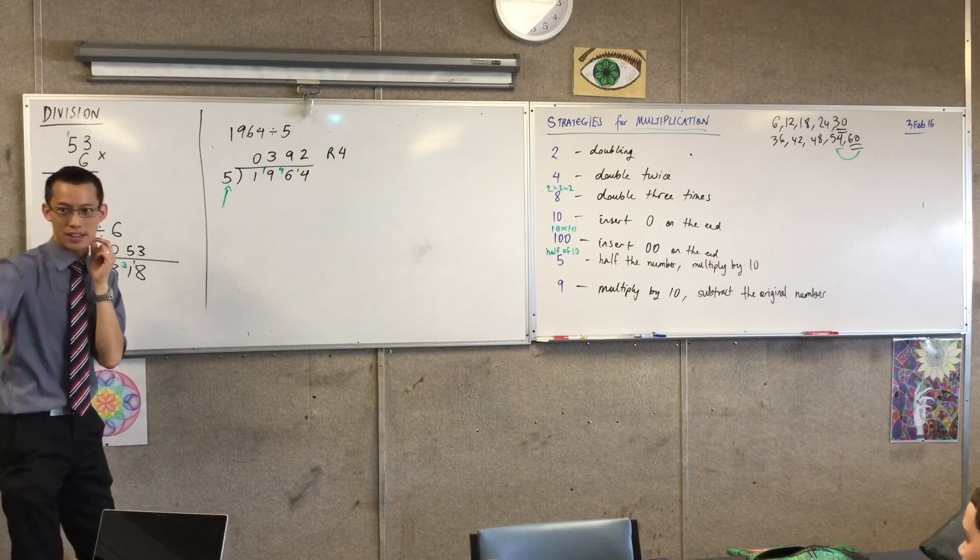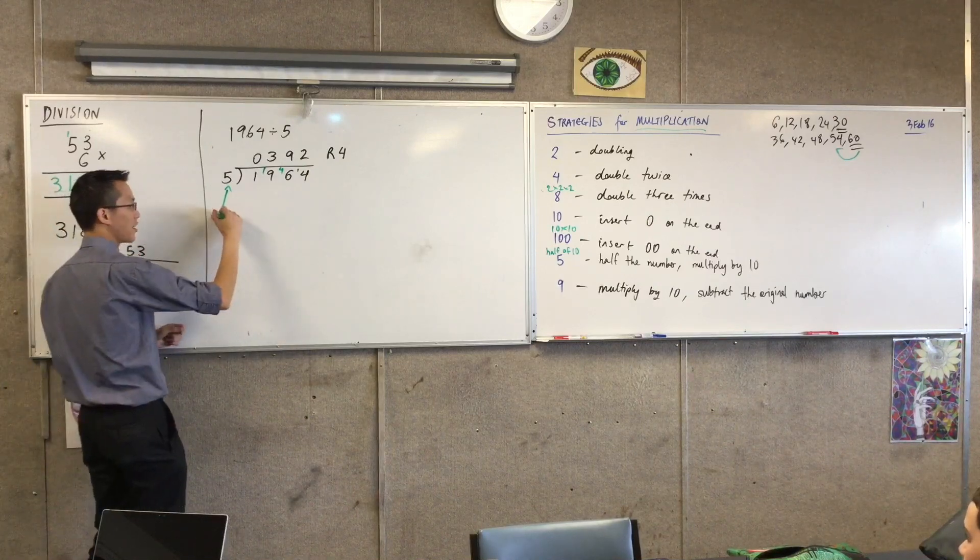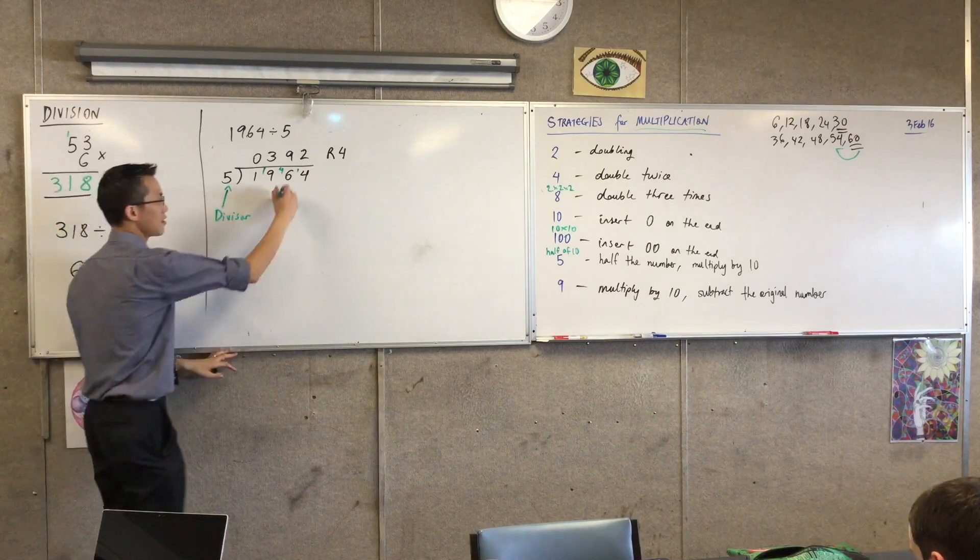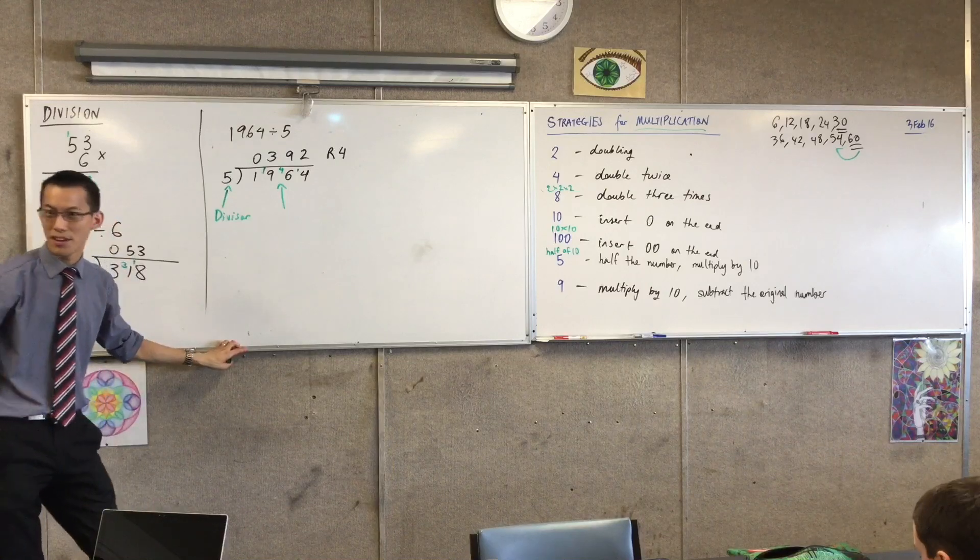Let's describe. Do you all know what the 5 is called? It starts with a D. Anyone? Yeah. Divisor. Divisor, very good. It's what you're dividing by. There's another thing that starts with D. This one here. It's got a very similar name. Does anyone know?